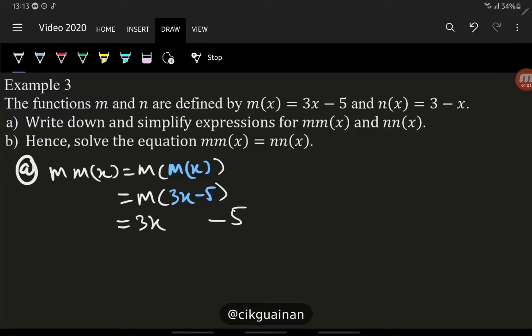But the problem is this x changes into 3x minus 5 because of this object, this input. So we expand them: 9x minus 15 minus 5, so we have 9x minus 20. So m(m(x)) is 9x minus 20.